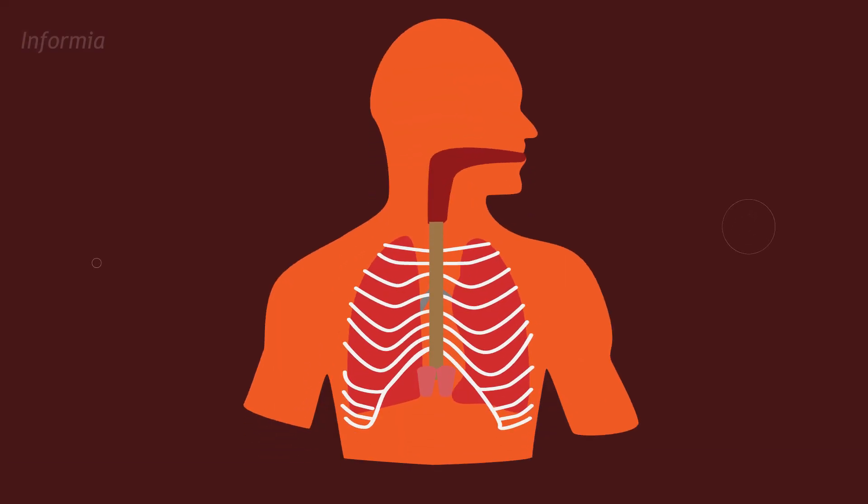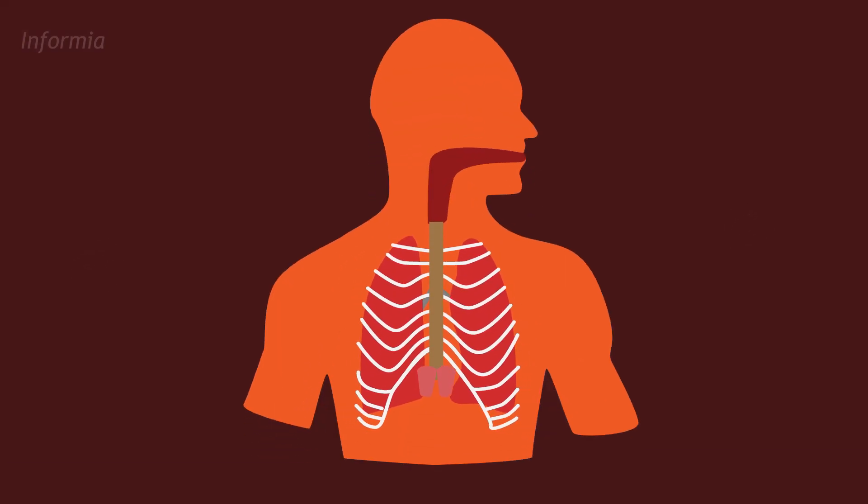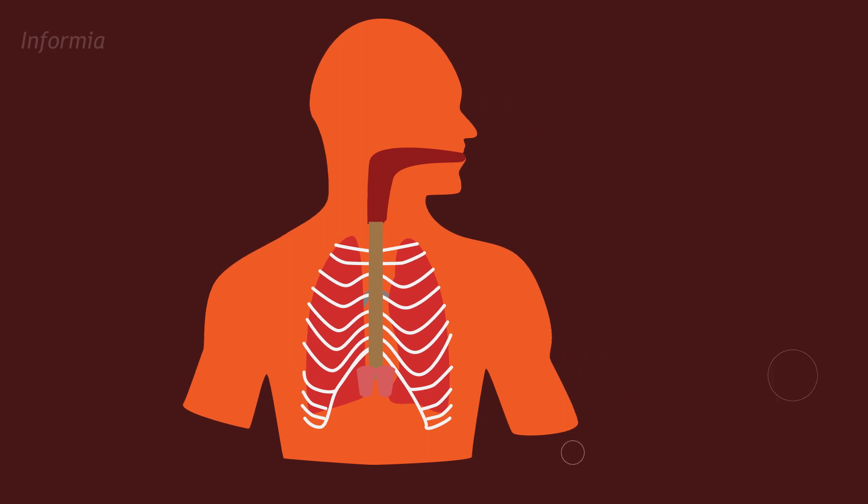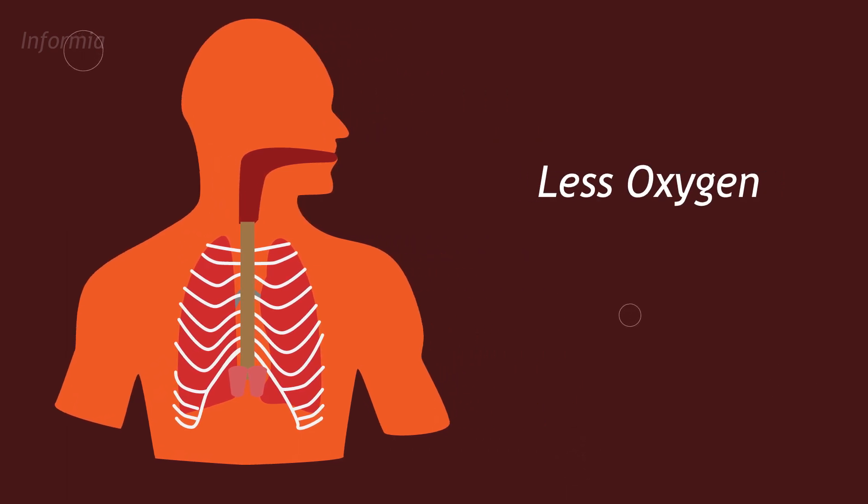When you're ready to exhale, your diaphragm and intercostal muscles relax, which makes your chest cavity get smaller and causes the air to flow out your lungs and out of your mouth and nose. This exhaled air has a little less oxygen than the inhaled air, but also about 4% more carbon dioxide.